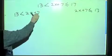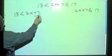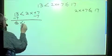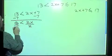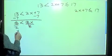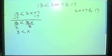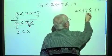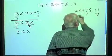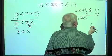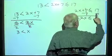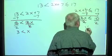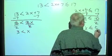To solve the first one, we subtract 7 from both sides: 6 is less than 2x, then divide by 2, giving us 3 is less than x. Now let's do the same on the other side: subtract 7 from both sides, leaving 2x less than or equal to 10, then divide by 2. We're left with x is less than or equal to 5.